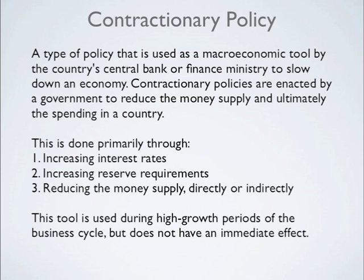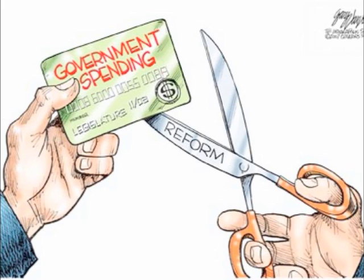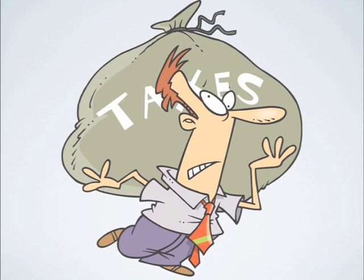This tool is used during high growth periods of the business cycle, but does not have an immediate effect. The government will go through contractionary fiscal policy when there is a decrease in government spending, which will lower price levels and inflation. The government will also increase taxes, meaning that individuals and households will have less disposable income to buy consumer goods and services.